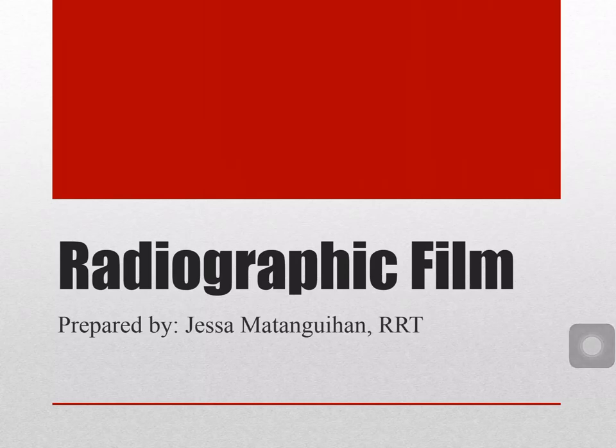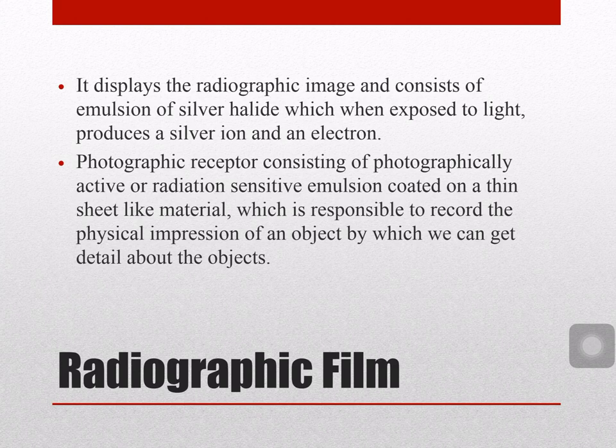This recorded lecture is about radiographic film. A radiographic film displays the radiographic image and consists of an emulsion of silver halide which, when exposed to light, produces a silver ion and an electron. That process is the formation of the latent image. It is also a photographic receptor consisting of a photographically active, origin-sensitive emulsion coated on a thin sheet-like material, responsible for recording the physical impression of an object.